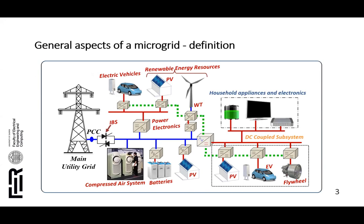There is no unique definition of microgrids, but a generally accepted definition is that a microgrid is an integrated energy system consisting of interconnected loads and different types of distributed generators. A microgrid, as an integrated system connected to the grid through the point of common coupling, can operate in two modes.